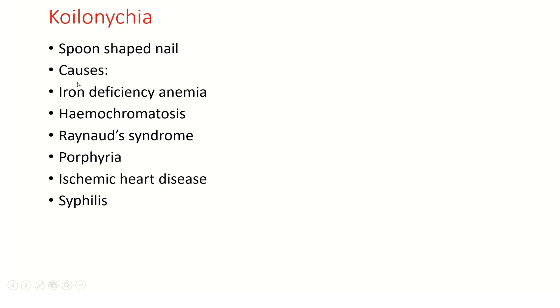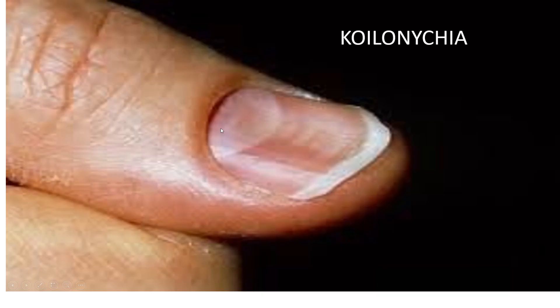Koilonychia is the spoon-shaped nail. Its causes are iron deficiency anemia, hemochromatosis, Raynaud's syndrome, porphyria, ischemic heart disease, and syphilis. You can see this is the spoon-shaped nail.